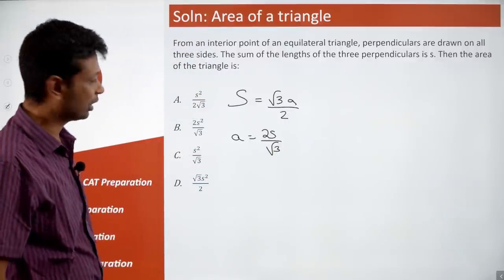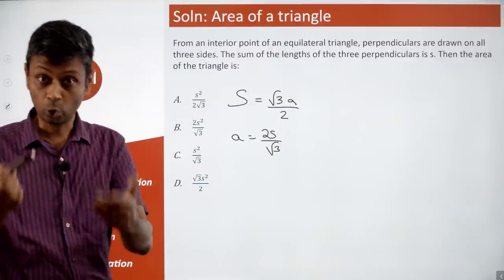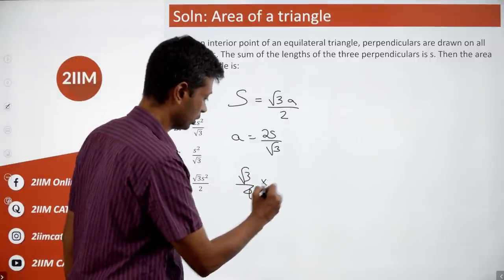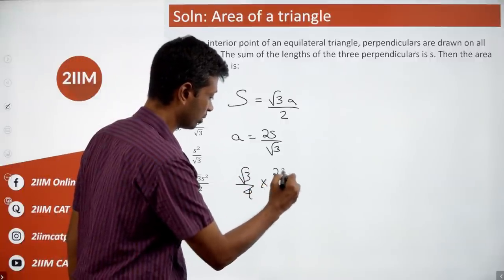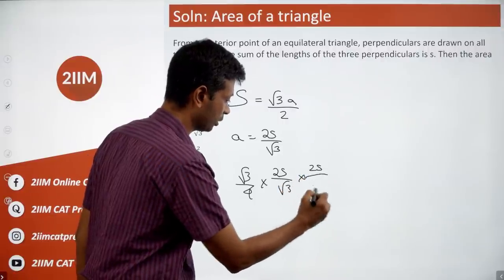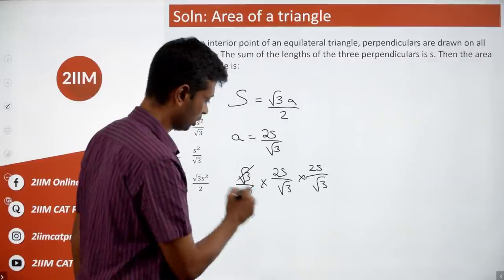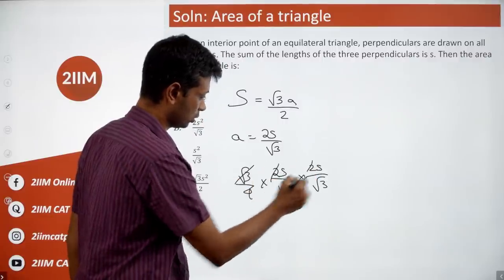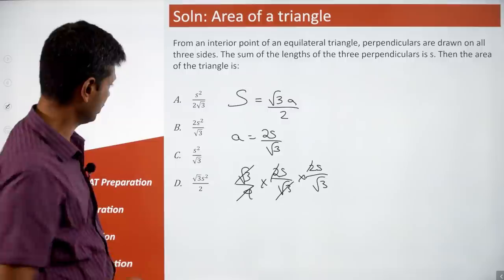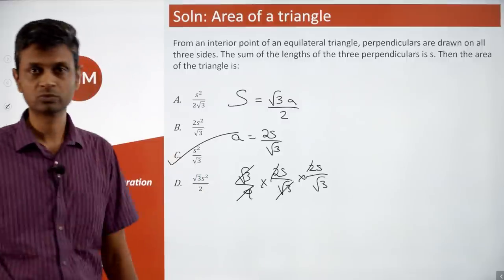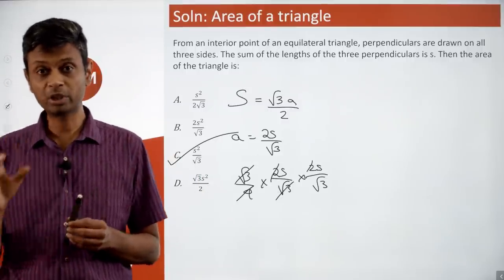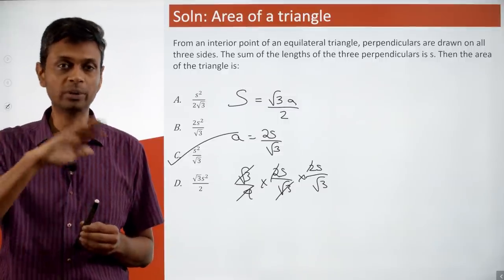Area of the equilateral triangle is (√3/4)·A². Therefore, area = (√3/4)·(2S/√3)·(2S/√3). One √3 gets knocked off, giving area = S²·4/√3 = 4S²/√3. The sum of the three perpendiculars equals the altitude of the equilateral triangle — that's the key fact.